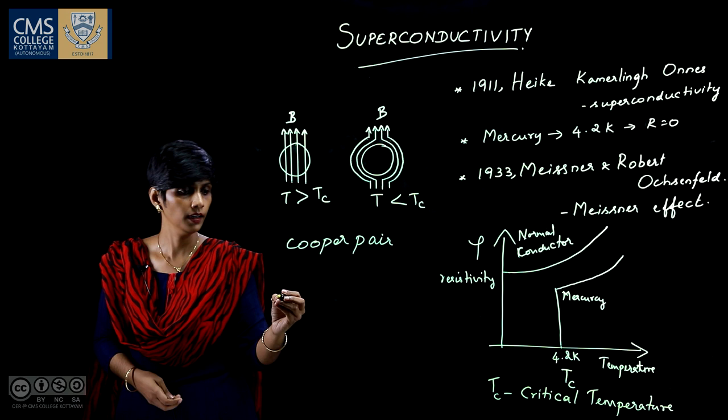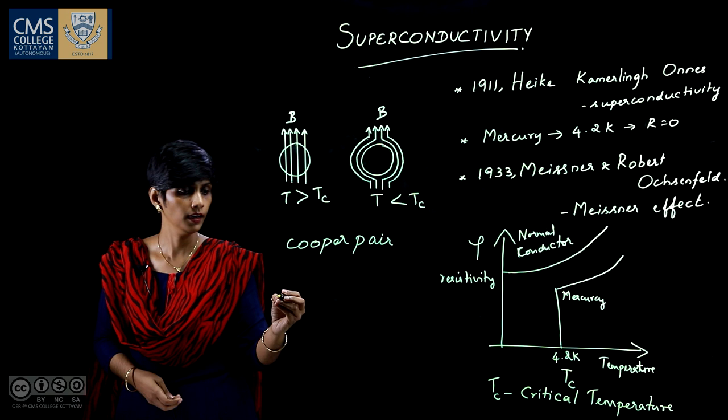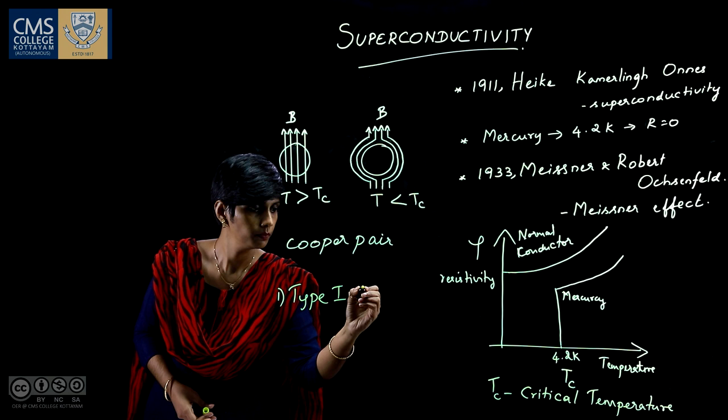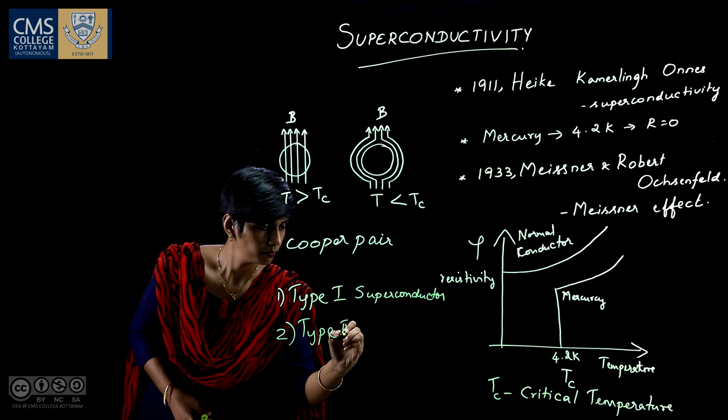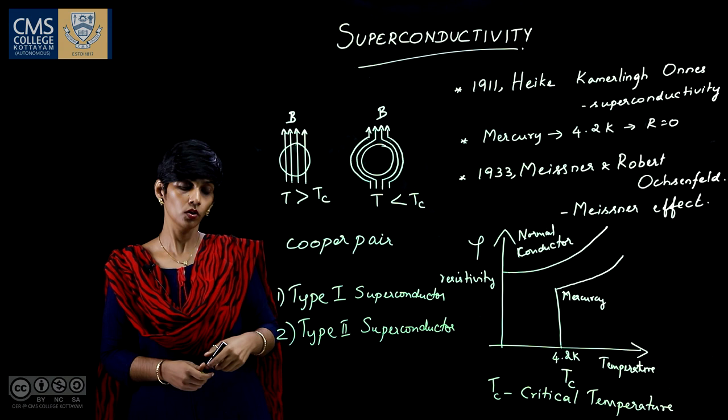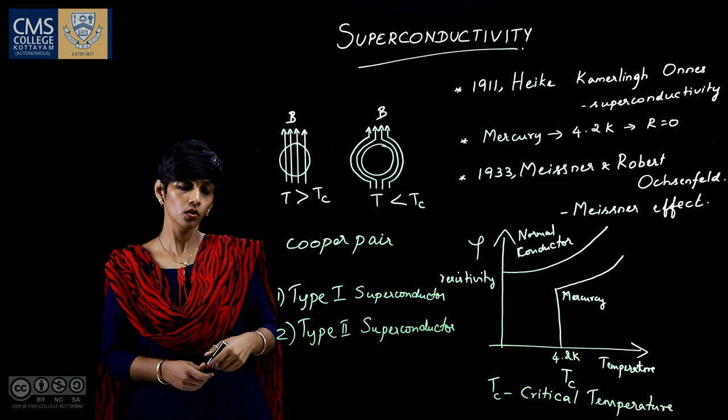Based on their behavior and characteristics, superconductors are classified into two types: Type 1 superconductors, also called soft superconductors, and Type 2 superconductors, also called hard superconductors.